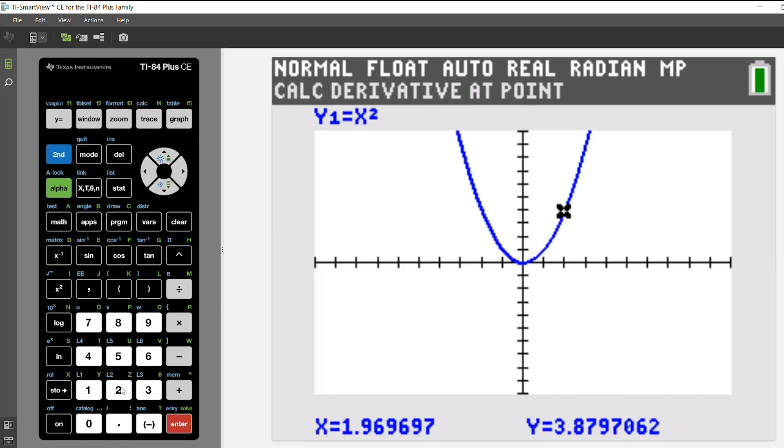If you wanted to find the derivative at 2, you'll insert 2, hit enter, and it'll tell you that at 2 your derivative is 4.